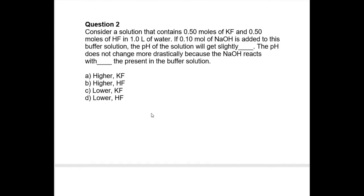Question two: consider a solution containing 0.5 moles of KF and 0.5 moles of HF in one liter of water. HF is a weak acid. If 0.1 mole of sodium hydroxide is added to this buffer solution, the pH will get slightly higher, and the pH does not change more drastically because the NaOH reacts with the acid. So your answer is B.